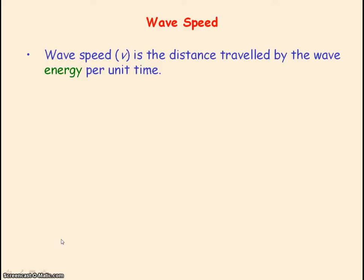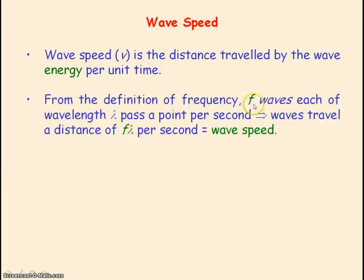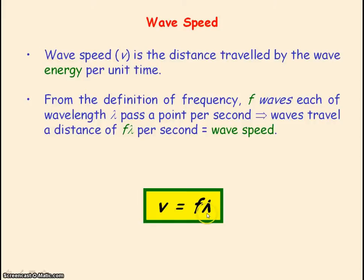Wave speed is the distance travelled by the wave energy per unit time. From the definition of frequency, there are F waves each of wavelength lambda that pass a point per unit time. So in total, the waves will travel a distance of F times lambda per second. F times lambda — frequency times wavelength — represents the distance travelled by the wave per unit time, so it represents our wave speed. Therefore, wave speed equals frequency times wavelength. The syllabus expects you to be able to derive this equation.